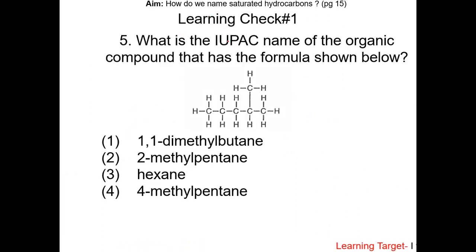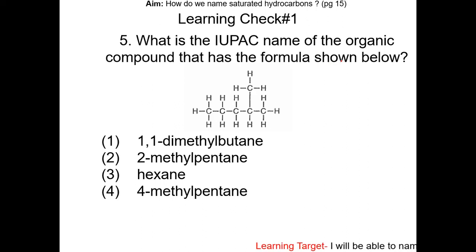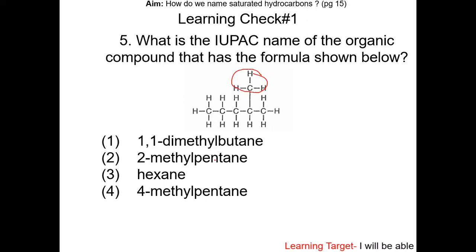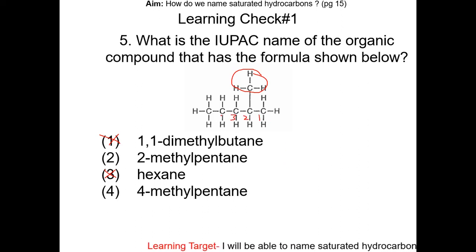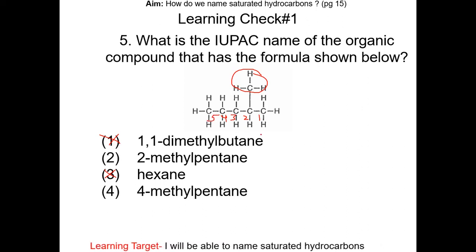Learning check number 1: what is the IUPAC name of the organic compound with the formula shown below? This compound has a parent chain of 5 carbons and a methyl substituent, so choices 1 and 3 are wrong. Between choices 2 and 4, the number should be as small as possible, so the methyl group will be on carbon 2. The answer is choice 2: 2-methylpentane.